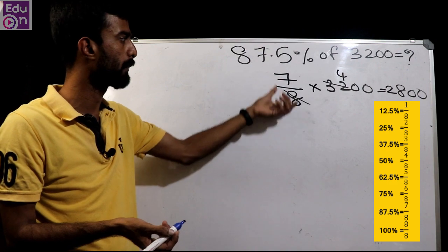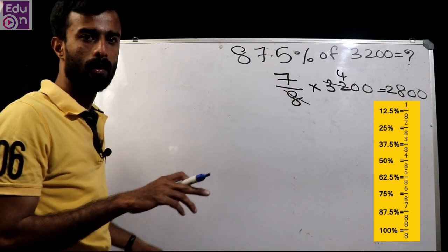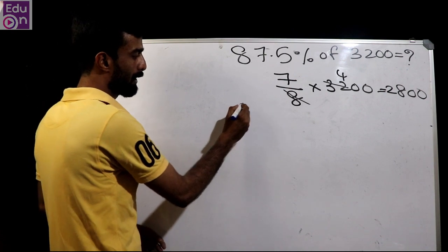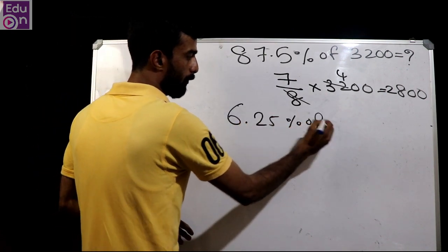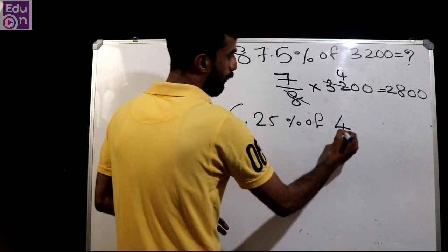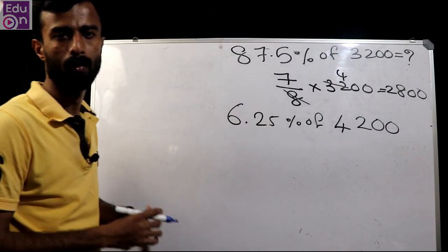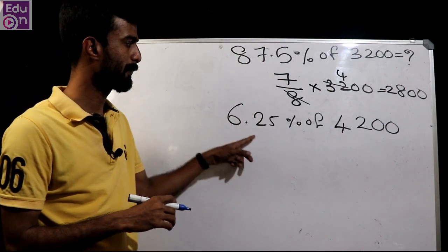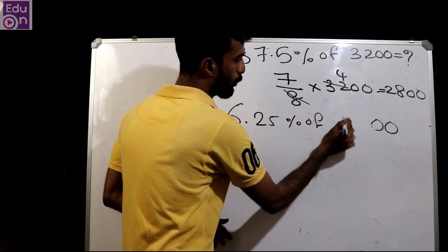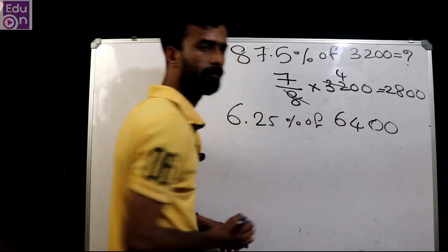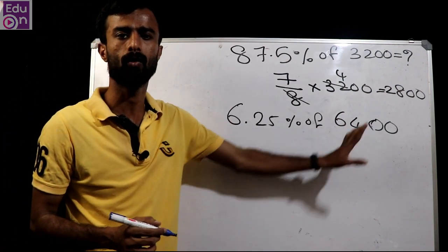The next question: find 6.25 percentage of 4,200. Another question: find 6.25 percentage of 64,000. Question changed: find 6.25 percent of 6,400.